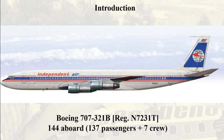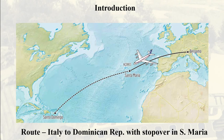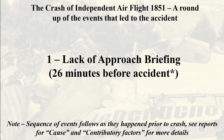Independent Air Flight 1851 was operated by a Boeing 707-320B and had 144 people aboard: 137 passengers and 7 crew. A picture of the plane in the Azores two weeks before the accident. Independent Air Flight 1851 was a charter flight carrying Italian tourists to the Dominican Republic with a stopover in Santa Maria for refueling.